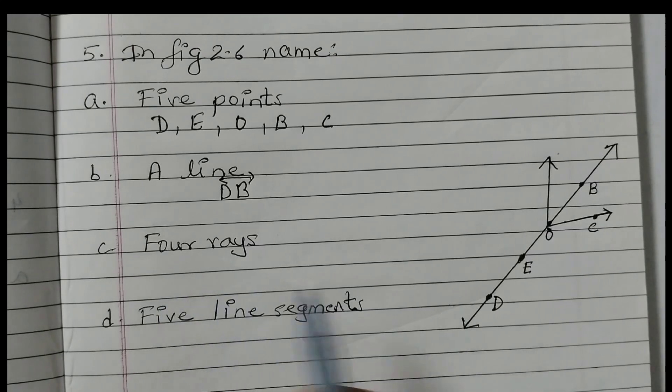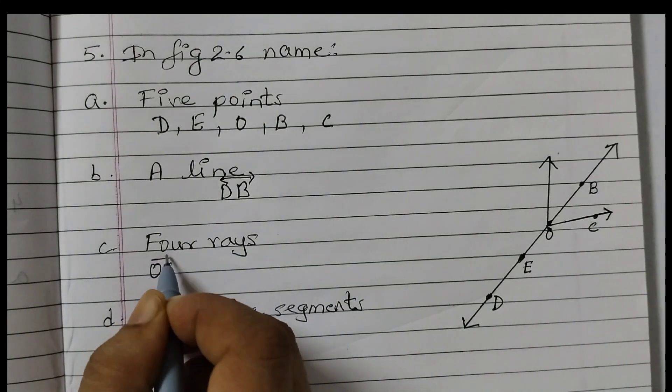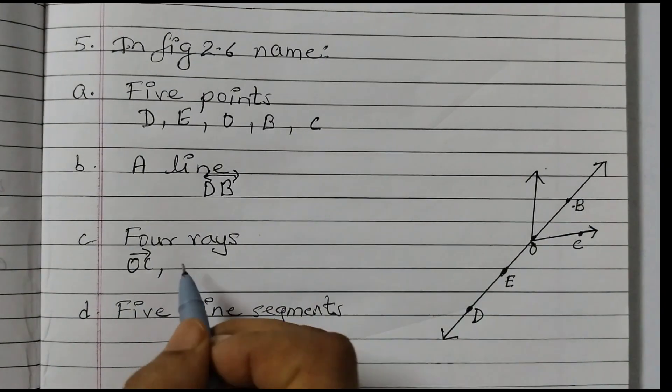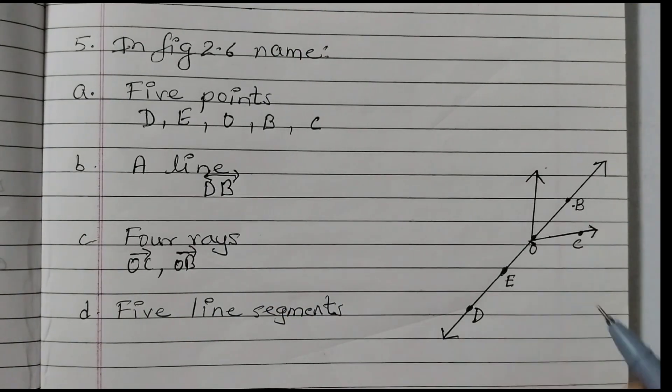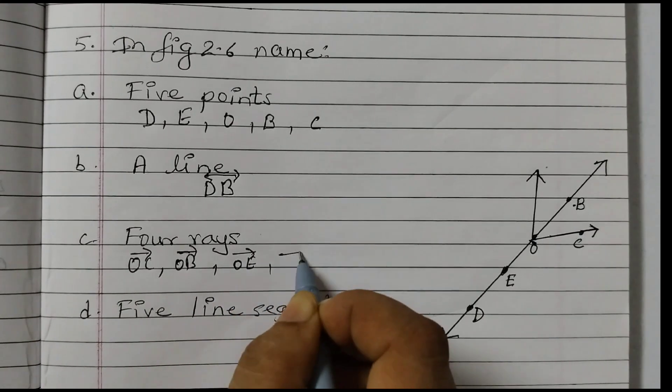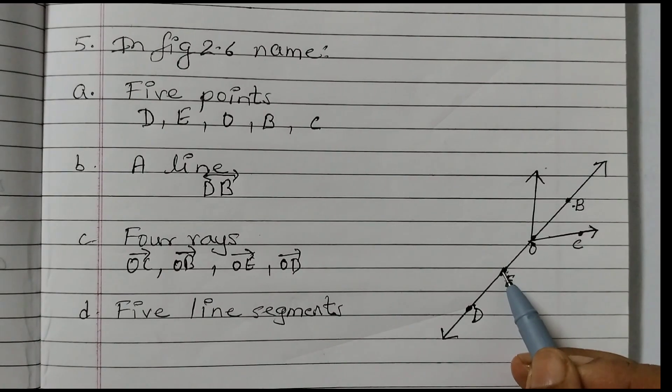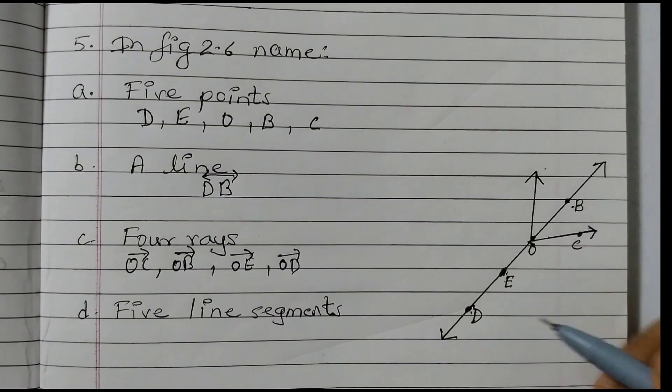Next is four rays. So we will take OC and we will put a small ray here. Ray OC, OB, Ray OB, OE, Ray OE, Ray OD. If you want you can take this as the starting point and you can take it as ED. That is also fine. Or you can take it as EB. Taking E as the starting point. So again there is no fixed answer for this. You can have different answers.